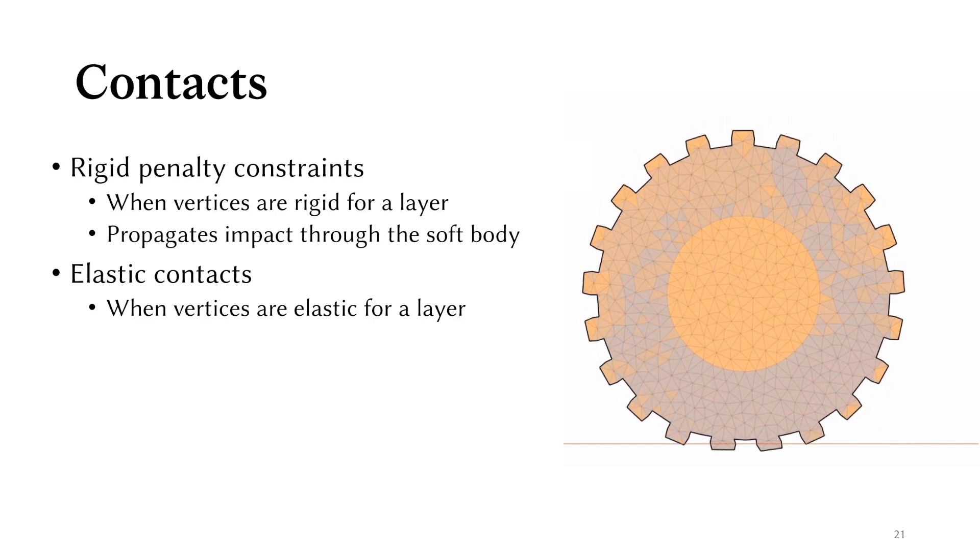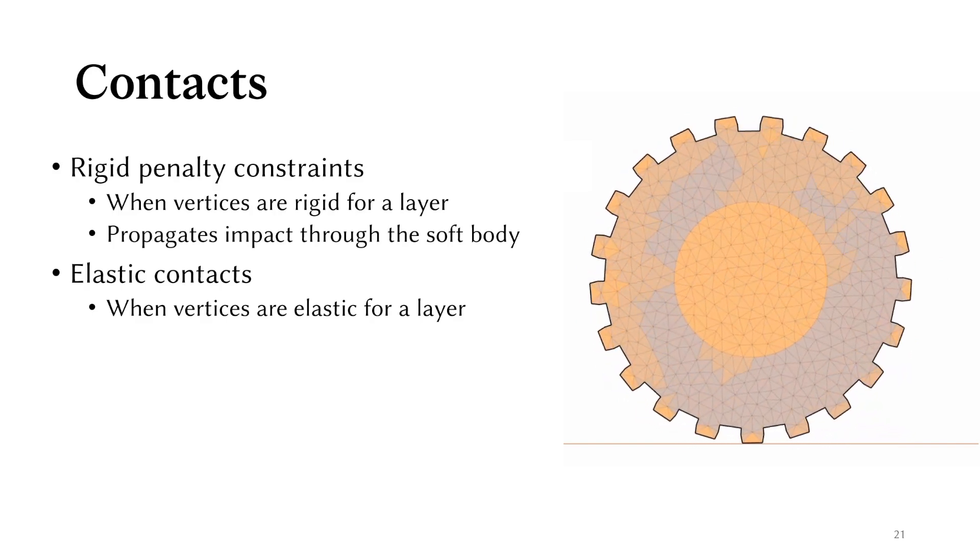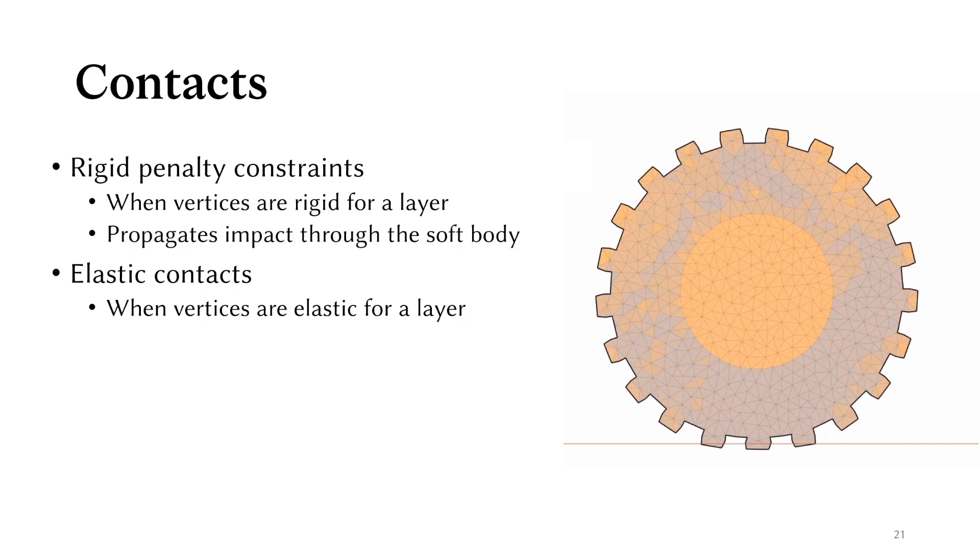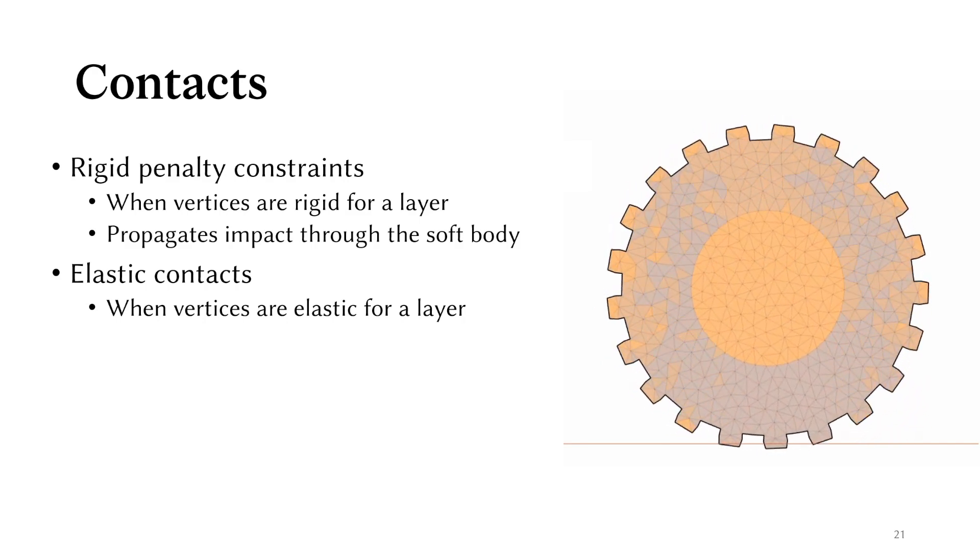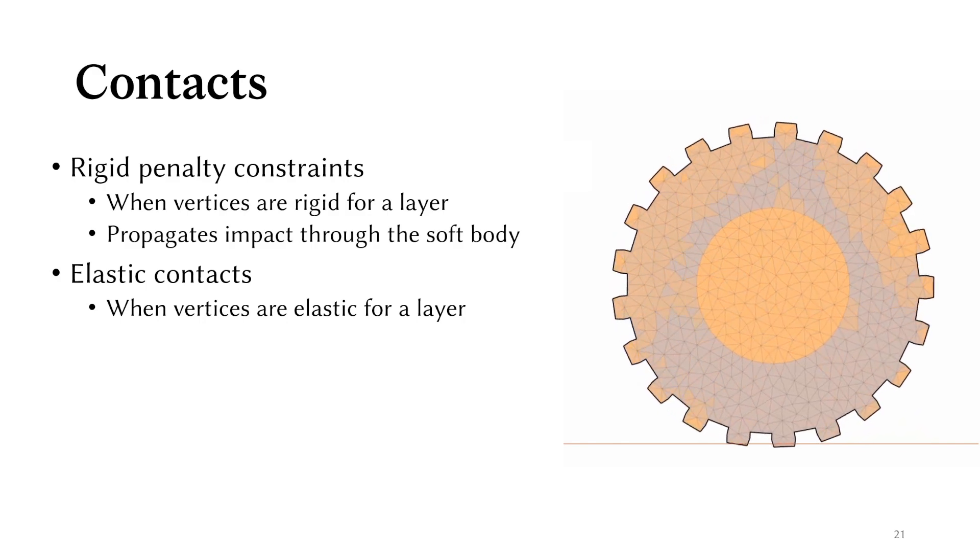For contacts, we use penalty constraints to correct interpenetration. The special twist here is that when contacts are on rigid vertices for a layer, the contacts are considered as rigid. For instance, in this wheel example, the first layer is always fully rigid.